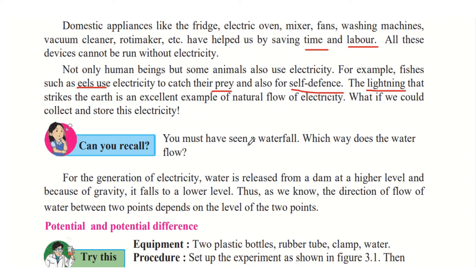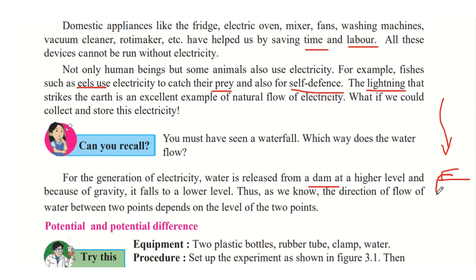Water always flows from a higher level to a lower level due to gravity. Similarly, for the generation of electricity, water is released from a dam at a higher level and falls to a lower level. The direction of flow of water between two points depends on the level of those two points.